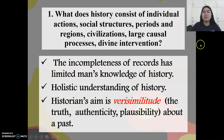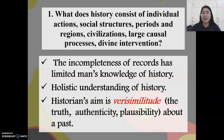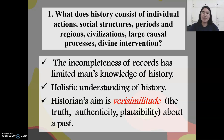The historian's aim is also verisimilitude, which means they need to arrive at the truth, the authenticity, as well as the plausibility of the event that happened in the past. Having history consist of individual actions, large causal processes, and divine intervention, they aim to achieve verisimilitude.